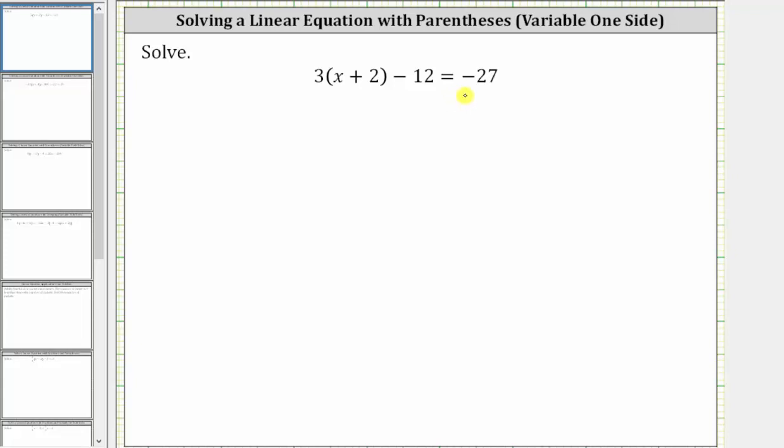For the first step, we need to simplify the left side of the equation by clearing the parentheses and combining like terms. To clear the parentheses, we distribute three. Three times x is three x, plus three times two gives us plus six, and then we have minus 12 equals negative 27.